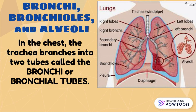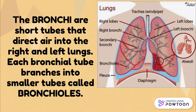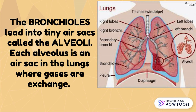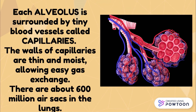In the chest, the trachea branches into two tubes called the bronchi or bronchial tubes. The bronchi are short tubes that direct air into the right and left lungs. Each bronchial tube branches into smaller tubes called bronchioles. The bronchial tubes lead into tiny air sacs called the alveoli. Each alveolus is an air sac in the lungs where gases are exchanged. Each alveolus is surrounded by tiny blood vessels called capillaries. The walls of capillaries are thin and moist, allowing easy gas exchange. There are about 600 million air sacs in the lungs.